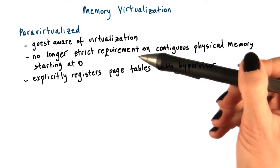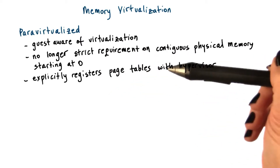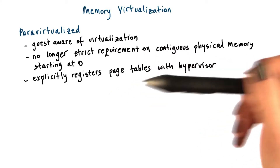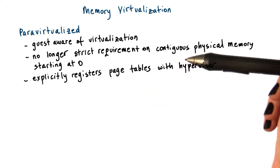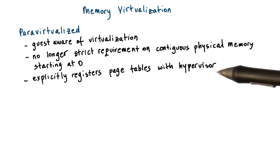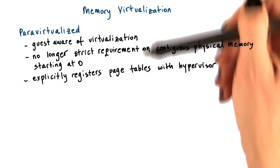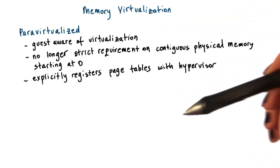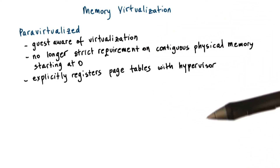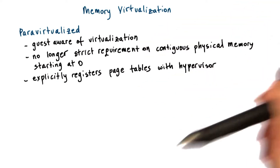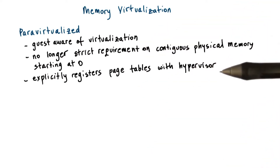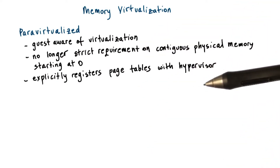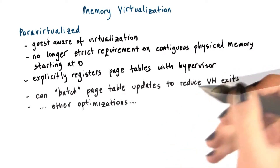The guest OS can explicitly register the page tables that it uses with the hypervisor, so there is no need for maintaining dual page tables — one at the guest and then another shadow one at the hypervisor level.